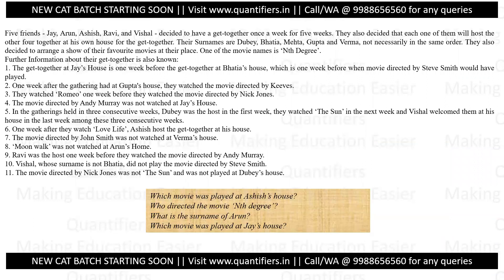Also, if you want to see all important notifications directly in your WhatsApp inbox, fill the Google Form in the description. Now today's set: five friends — Jay, Arunashree, Shravi, and Vishal — decided to have a get-together for five weeks. Each one of them will host the other four at their own house. The five hosts have surnames Dubai, Bhatia, Mehta, Gupta, and Varma — not necessarily in the same order. They also decided to arrange a show of their favorite movies at their place.